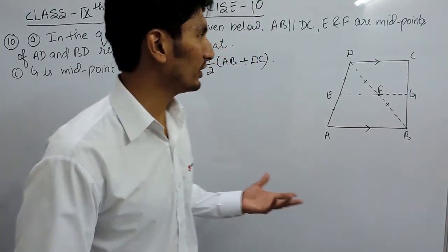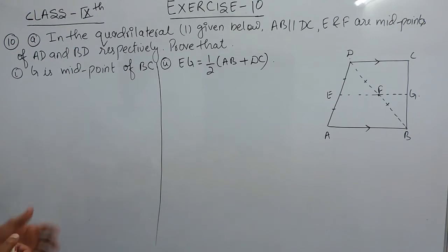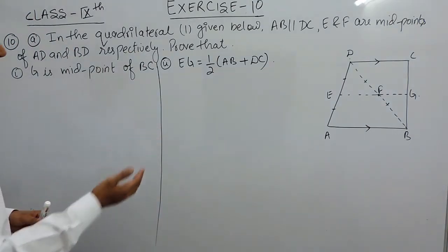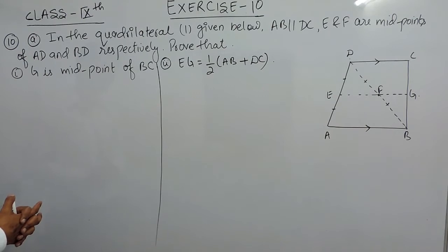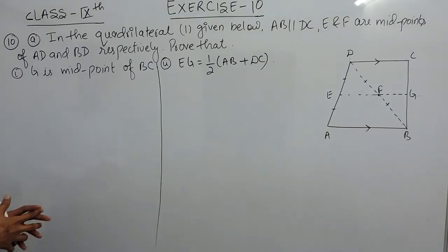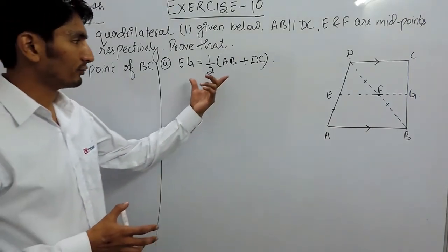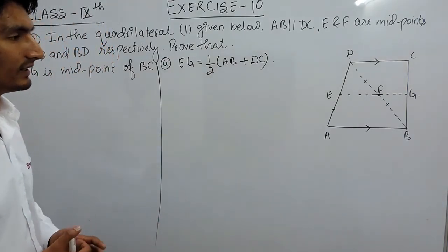Hello everyone. In this video we are going to solve the first part of question number 10. We are given a quadrilateral ABCD where AB is parallel to DC, and E and F are the midpoints of AD and BD. We have to prove that G is also the midpoint of BC, and in the second part, that EG is equal to half of AB plus DC.